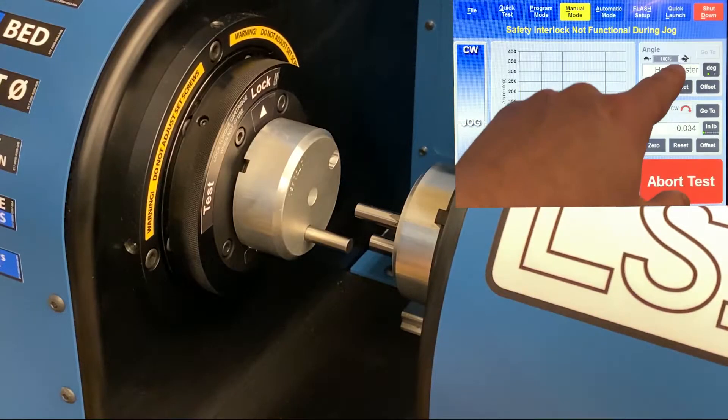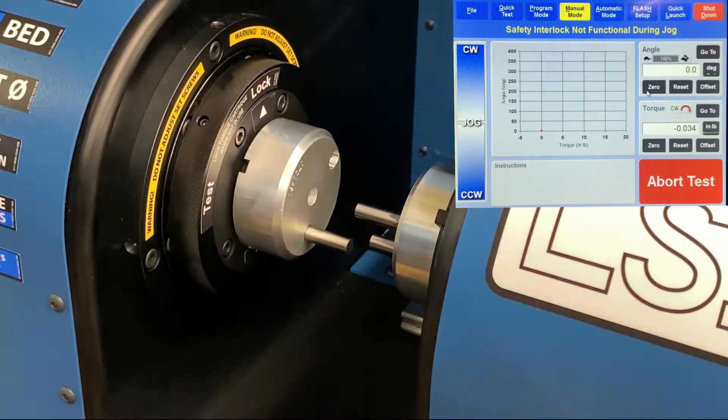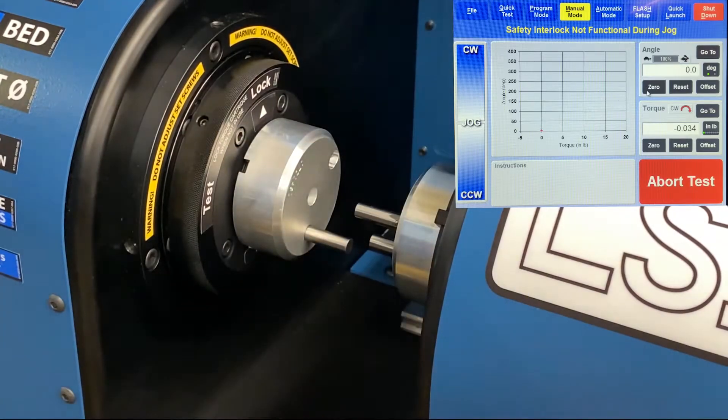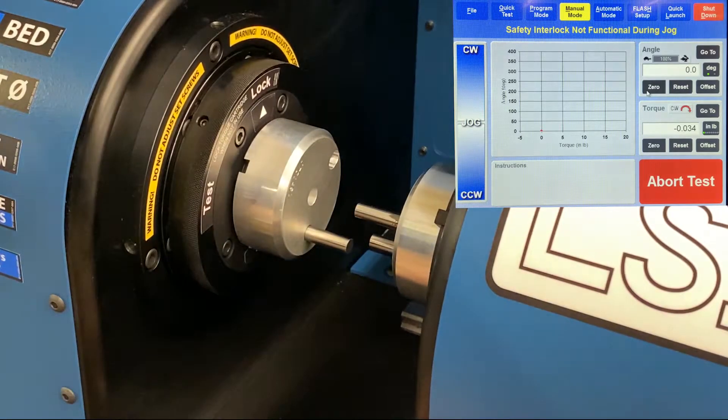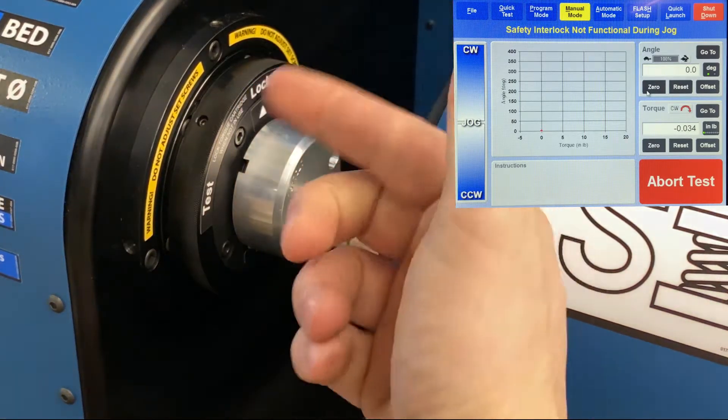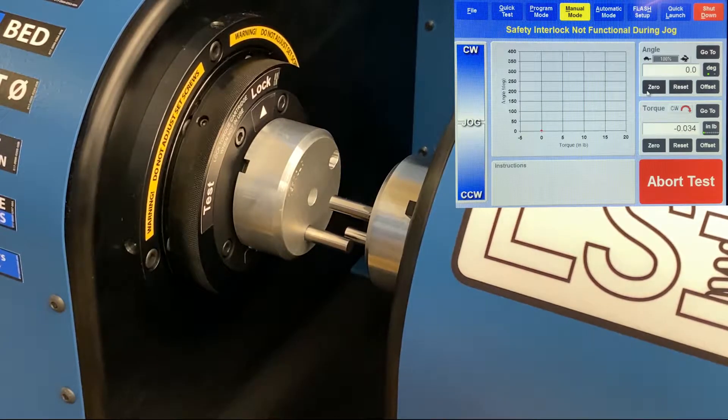Okay, so we're going to home the tester so that it has an angle to start from while we try to line up these custom tooling plates. I'm going to bring it close together, and I can tell that I got to move counterclockwise, so I'm going to do that manually.